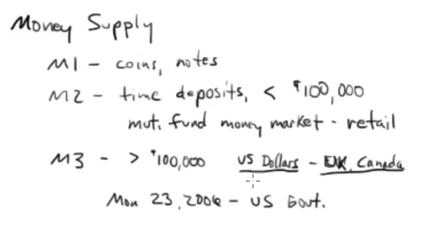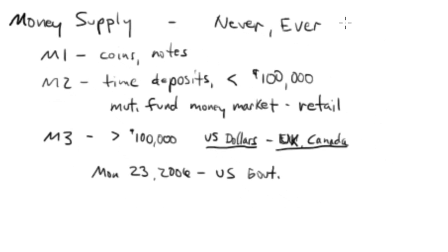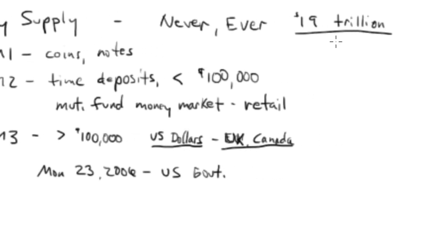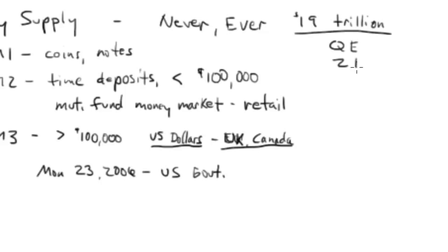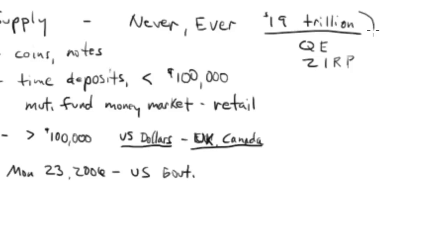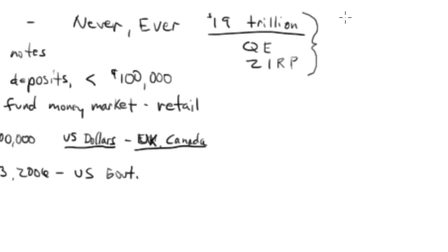Why did the government stop reporting M3? Because this is what the big institutions are doing, and the government just doesn't want us tracking what big institutions are doing with their money. Why talk about money supply? We've never ever had 19 trillion dollars sitting in our system, thanks to the Fed's quantitative easing and zero interest rate policy. This occurred because of the 2008 complete market meltdown, and the Federal Reserve pumped all this money into the system trying to create inflation.